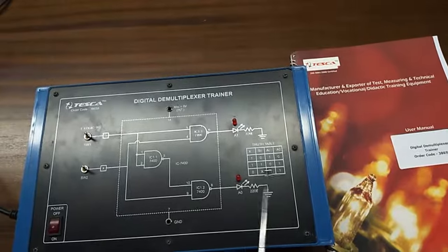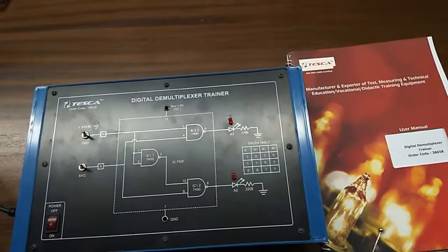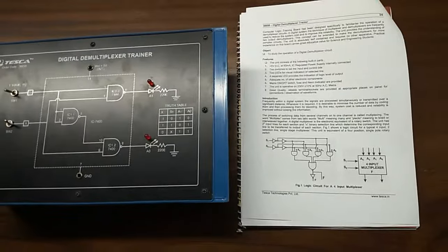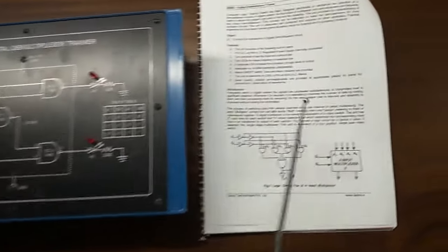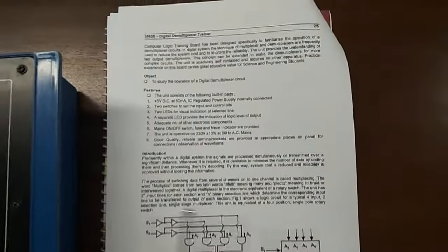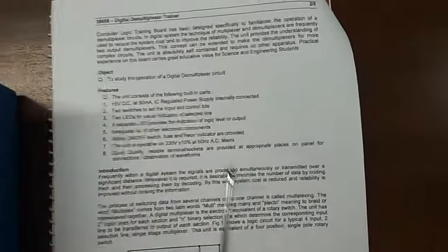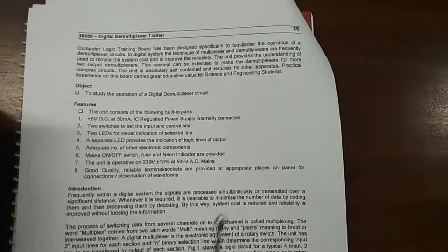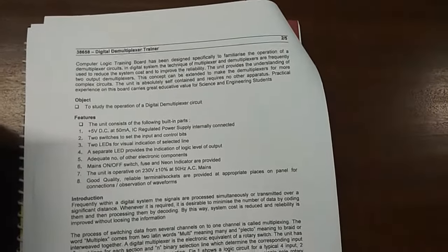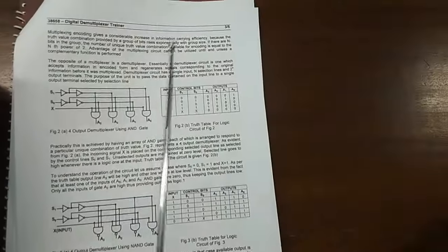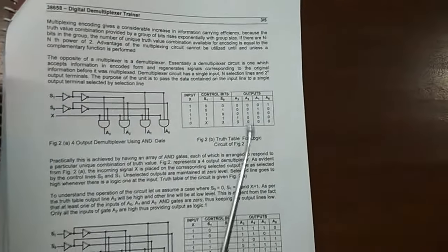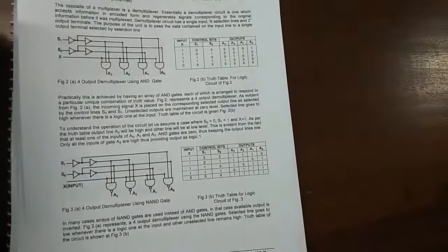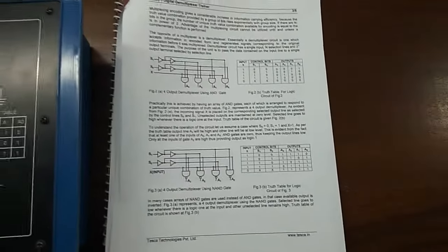Here the truth table is given on the trainer kit, and this is the user manual included in this kit. You can see here the detailed introduction of the demultiplexer circuit. For better understanding, you can follow this manual and then perform the experiment.